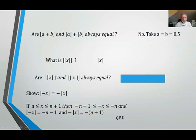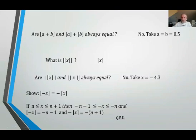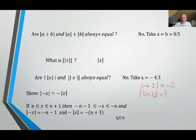Now let's compare the absolute value of the floor of x versus the floor of the absolute value of x. They are not always equal — here's a counterexample. Take x equals negative 4.3. The floor of negative 4.3 is negative 5. The absolute value of negative 5 is 5.